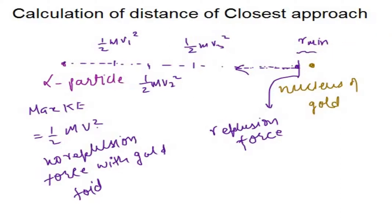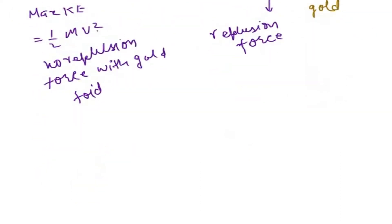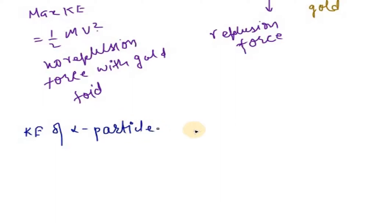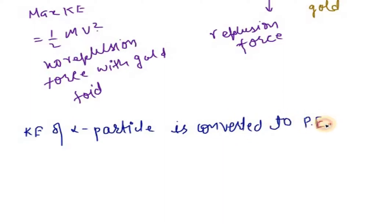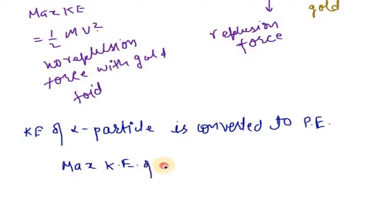To get the value of R minimum, we use energy conservation: all the kinetic energy of the alpha particle is converted into the potential energy of the system. The maximum kinetic energy of the alpha particle is fully converted into the potential energy of the system.